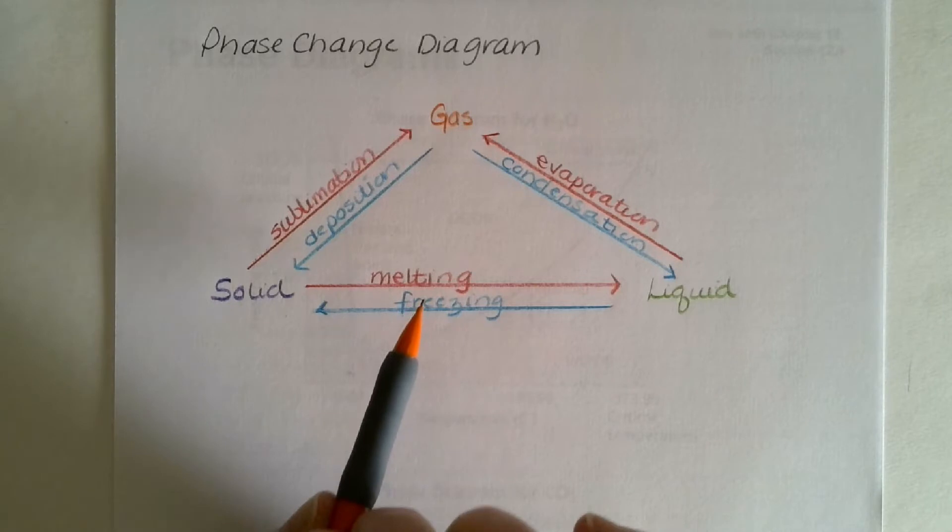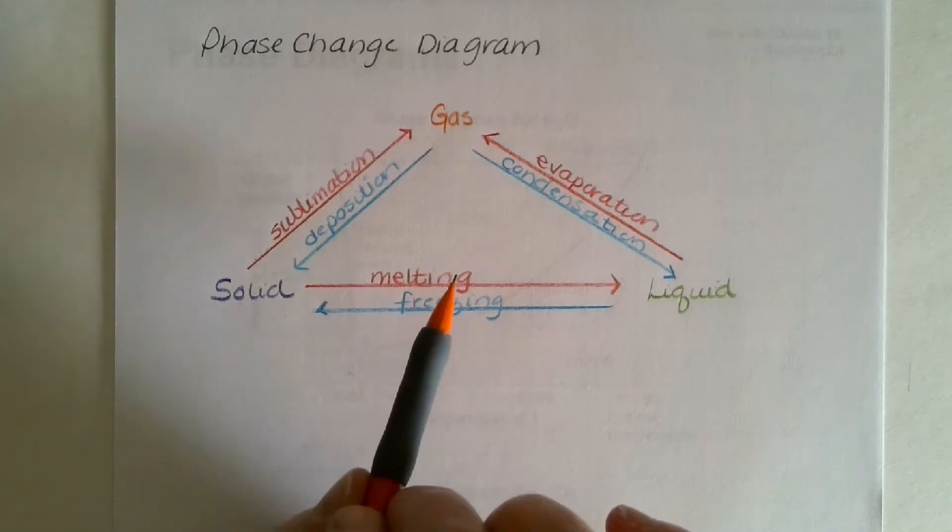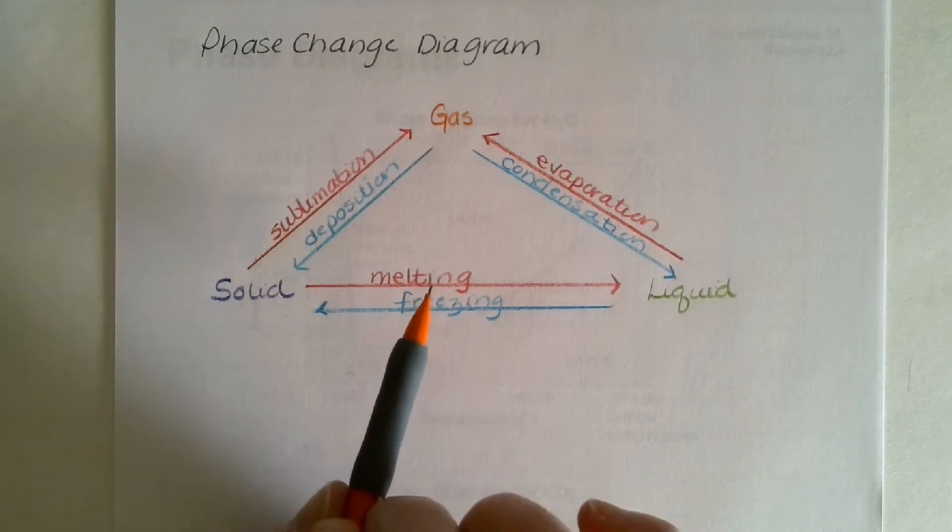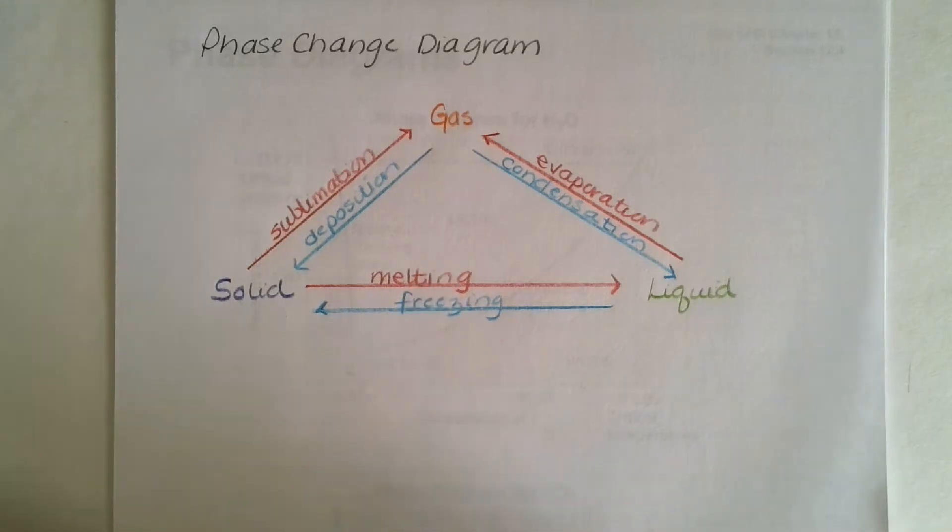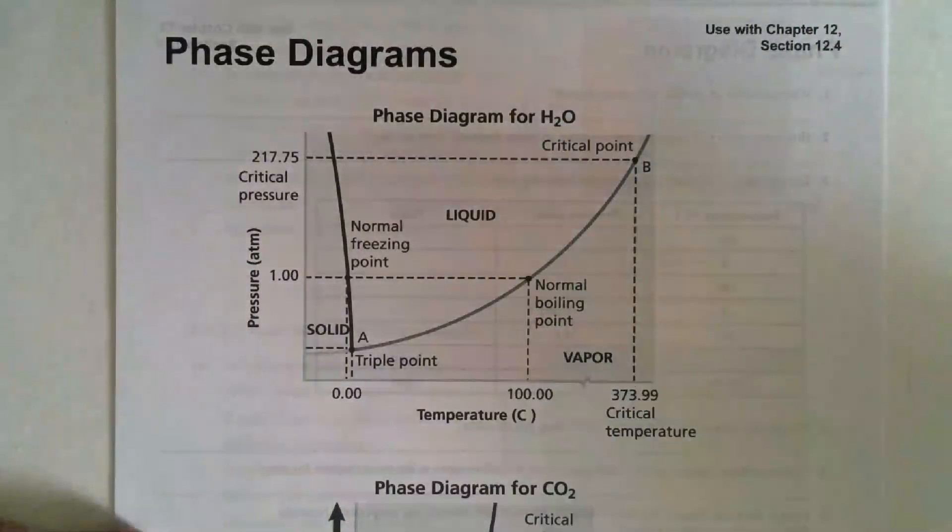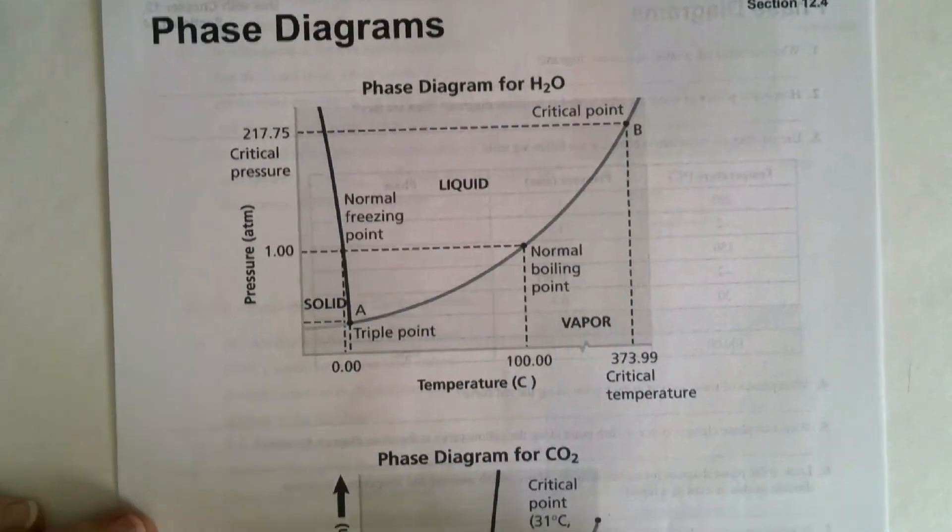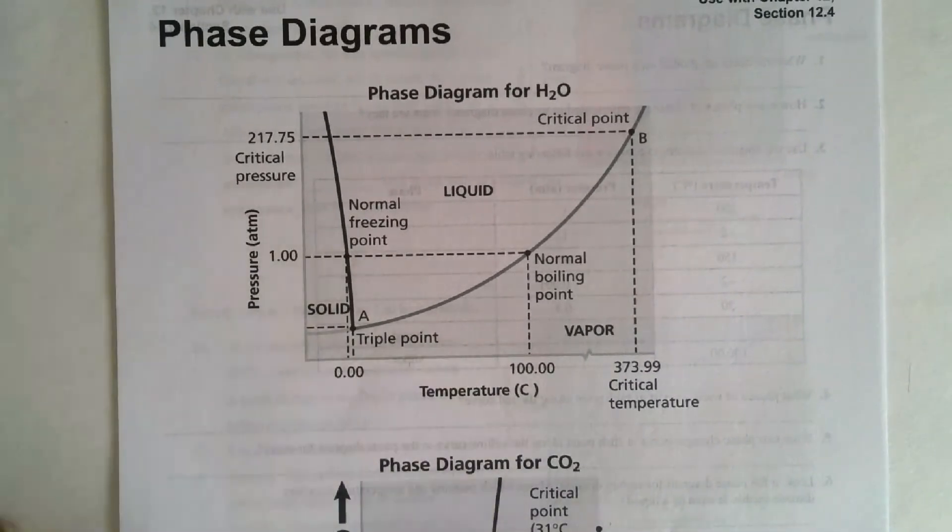In most substances, there's a specific temperature in which these things occur if you're going from one to the other. It also is dependent upon the atmospheric pressure. So we have another type of diagram to help us with that. These are called phase diagrams. And this is a phase diagram. The first one is a phase diagram for water.